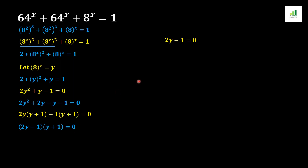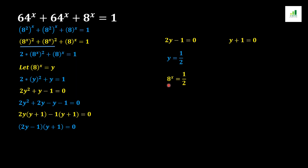In the next step we set 2y minus 1 equals 0 and y plus 1 equals 0 separately and solve for y. From 2y minus 1 equals 0, the 1 moves to the other side and becomes positive, then dividing by 2 gives y equals 1 over 2.